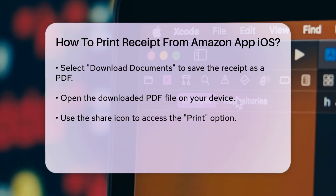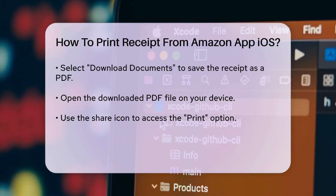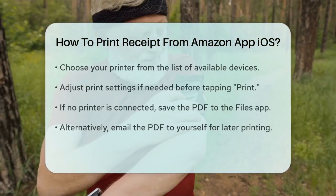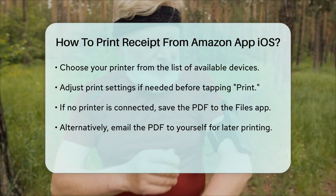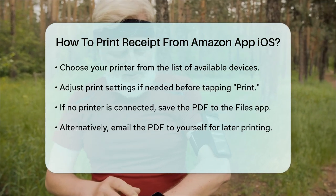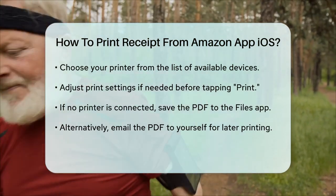Select your printer from the list of available devices, adjust any print settings if necessary, and then tap Print to get your hard copy of the Amazon receipt.